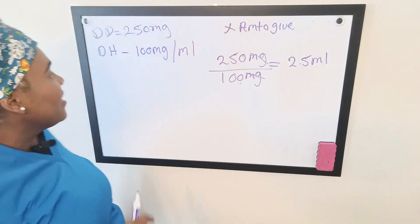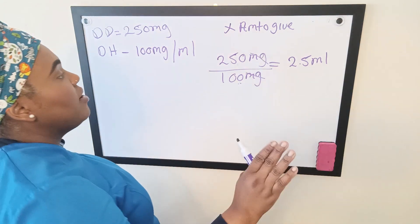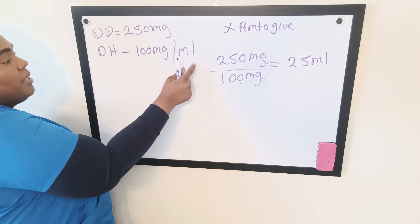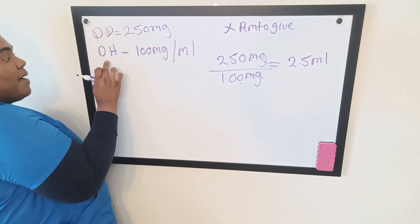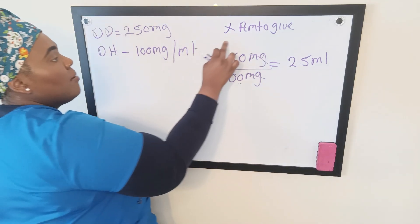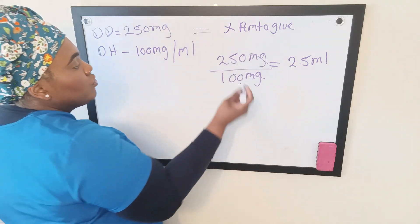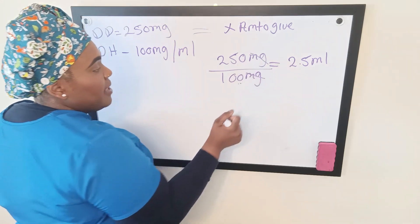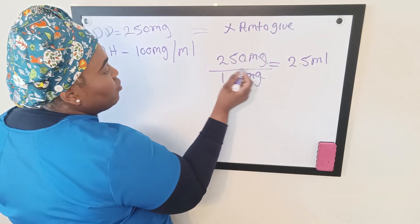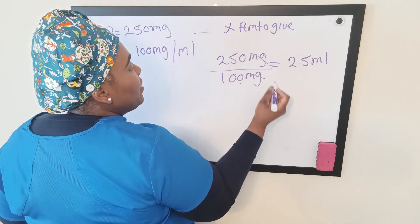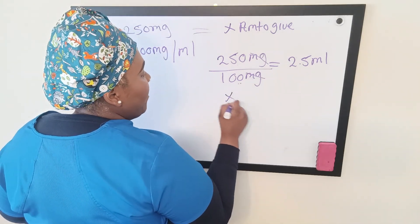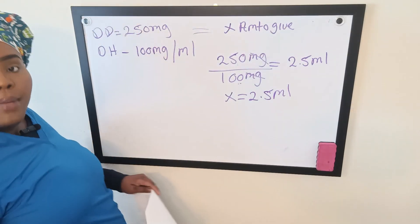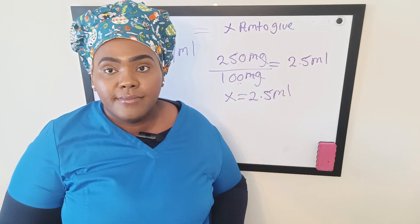The order was to give the patient 250 milligrams; what we have available is 100 milligrams per mil. We divide the desired dose by the dose on hand: 250 milligrams divided by 100 milligrams — milligrams cancel out — 100 into 250 is 2.5. So we give this patient 2.5 mils to deliver the 250 milligram bolus.